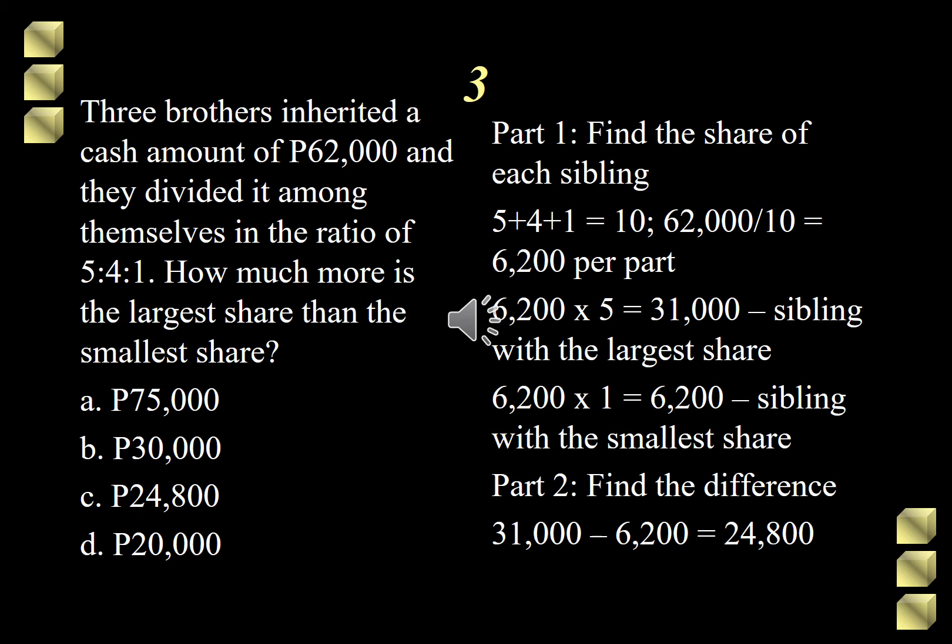For our third problem, three brothers inherited a cash amount of 62,000 pesos, and they divided it among themselves in the ratio of 5 is to 4 is to 1. How much more is the largest share than the smallest share? The choices are A, 75,000, B, 30,000, C, 24,800, and D, 20,000.